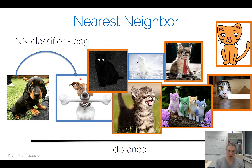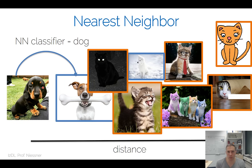You might imagine there are a couple of drawbacks — it could be a large dataset with a lot of compute involved. It could also be noisy: there might accidentally be one image of a cat that looks surprisingly similar. To be more robust, instead of relying on just the single closest image, we can take a median of sorts — take multiple nearest neighbors and do a majority vote on which class is the majority among the k nearest neighbors.